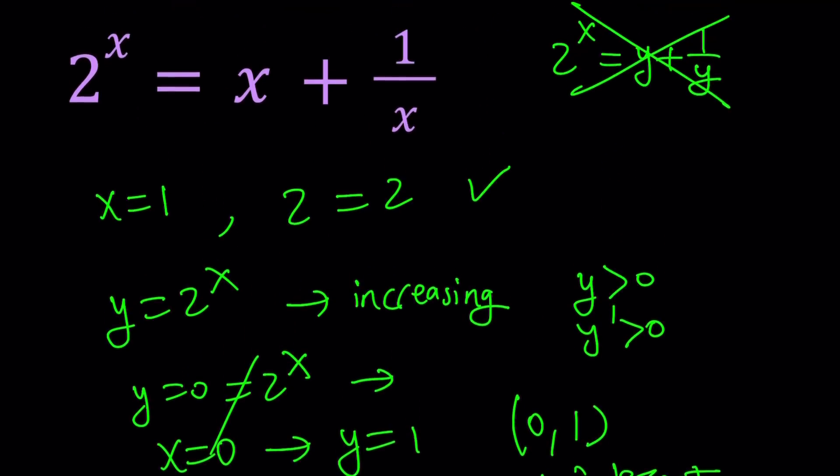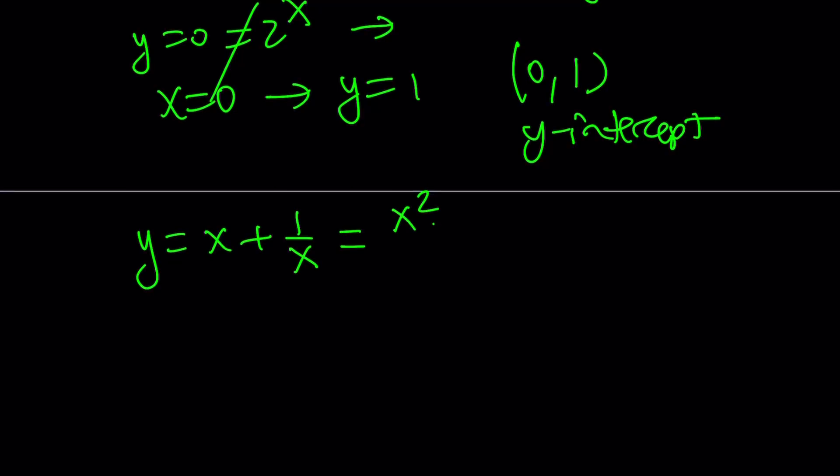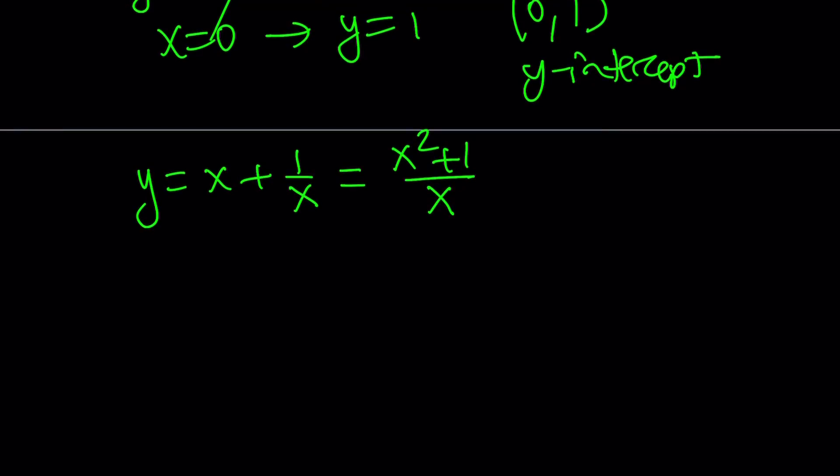So let's go ahead and take a look at the function on the right-hand side, which is the rational function. That is going to be a little more interesting because it has a rational piece. Obviously, you can write this as x squared plus 1 divided by x, which makes more sense from a rational function perspective because now we have a numerator and a denominator, so we have a single fraction.